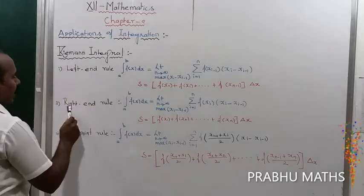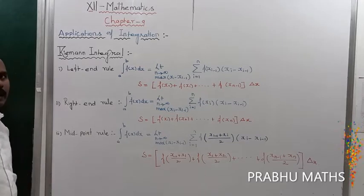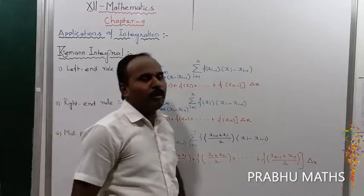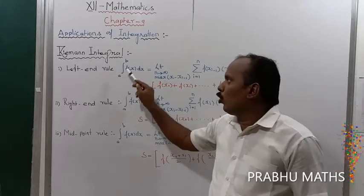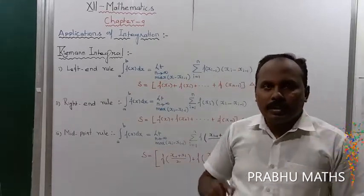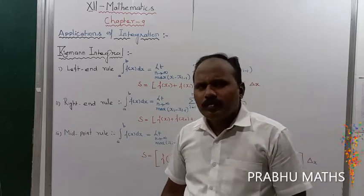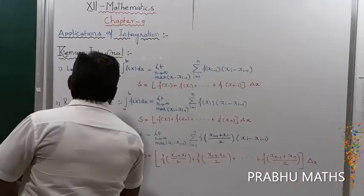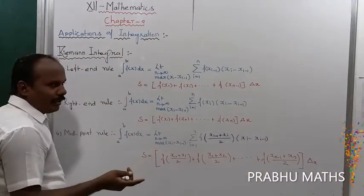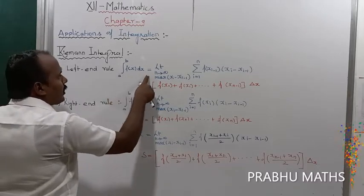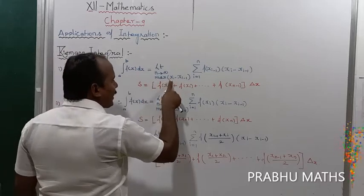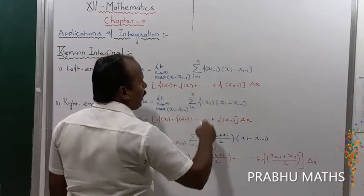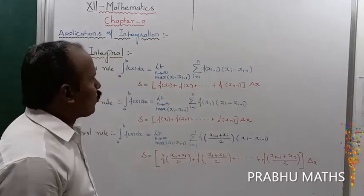Riemann Integration is split into three parts: the first is the Left End Rule, next is the Right End Rule, and next is the Midpoint Rule. For the Left End Rule, the definite integral from a to b — where a limit value is given — is equal to the limit as n approaches infinity of the summation where i varies from 1 to n of f of x-sub-(i-1) times delta x.